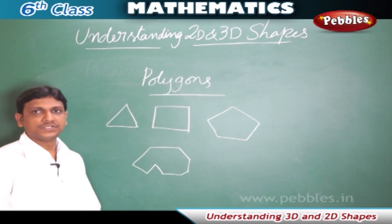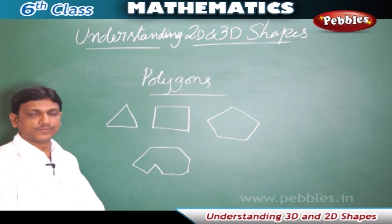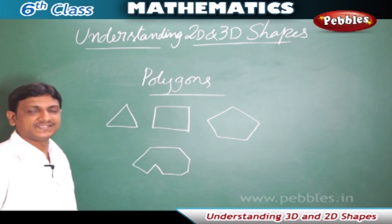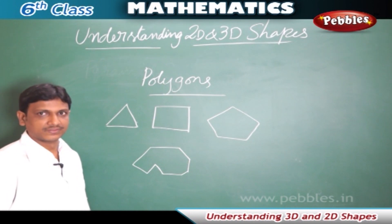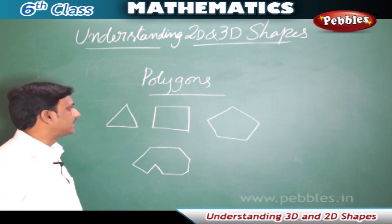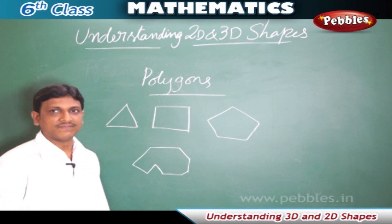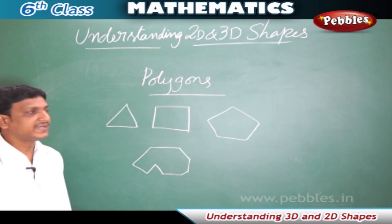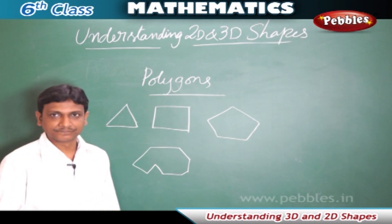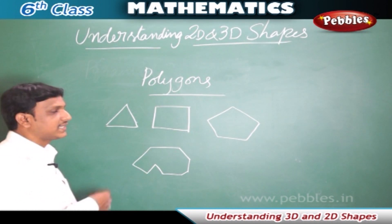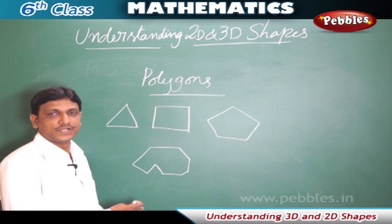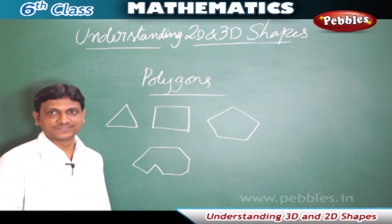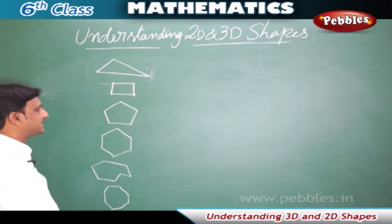Now we are going to learn about polygons. We have already learned about polygons in the basic geometrical ideas chapter. A polygon must have at least 3 sides — any shape with 3 or more sides is called a polygon. Polygons are categorized according to their number of sides. Let us look at the different types of polygons.